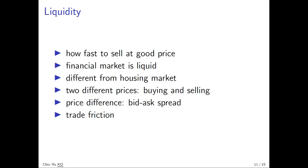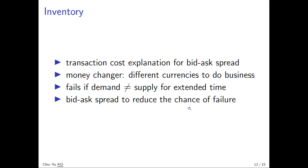The bid-ask spread is a measure of trading friction. We will learn a particular model to understand how bid-ask spread can be estimated from transaction price data. We also learn another model called the Roll model to estimate bid-ask spread from high and low daily prices. The next thing we want to study is the inventory model, which tries to understand the source of bid-ask spread or trading friction. The inventory model provides a transaction cost-based explanation for it.